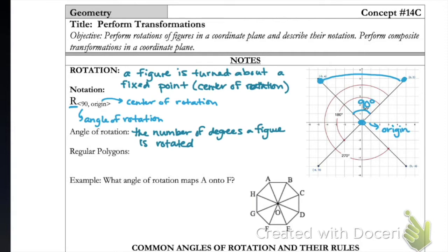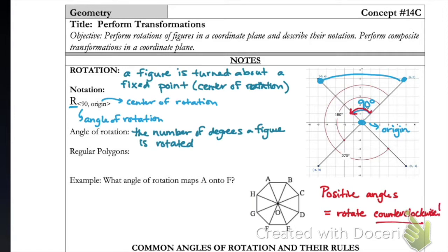If I take point AB and rotate it 90 degrees, it goes to the left to the next quadrant. When we have a positive angle we always rotate counterclockwise — that goes against what we normally expect, but positive angles go counterclockwise. If the angle were negative 90 degrees, we would go clockwise.